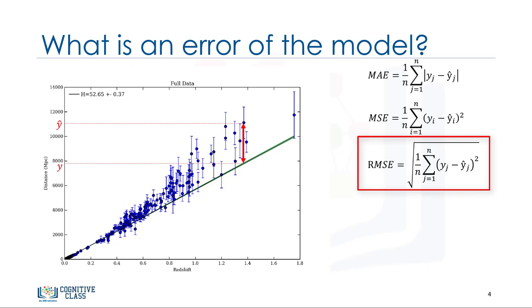Root mean squared error is the square root of the mean squared error. This is one of the most popular of the evaluation metrics because root mean squared error is interpretable in the same units as the response vector, or y units, making it easy to relate its information.